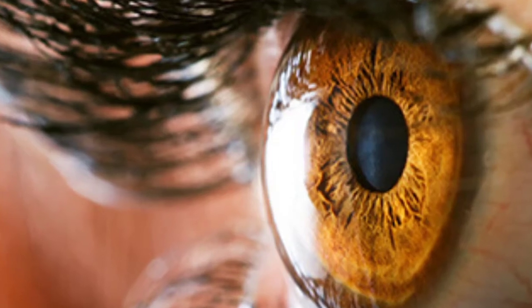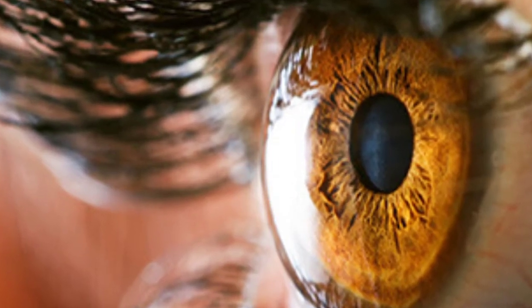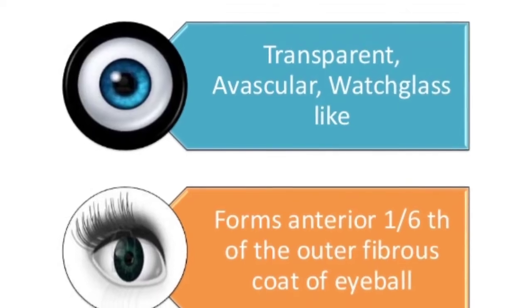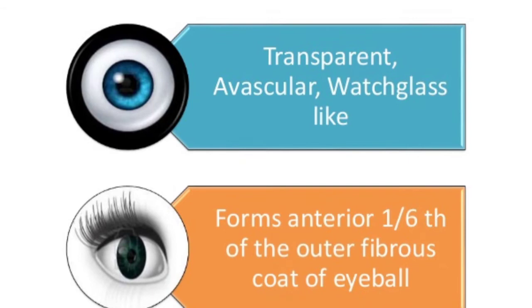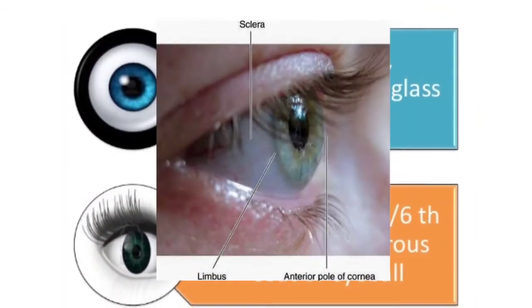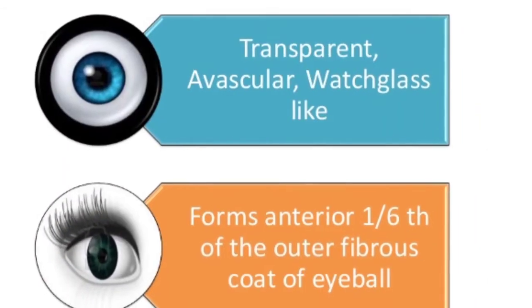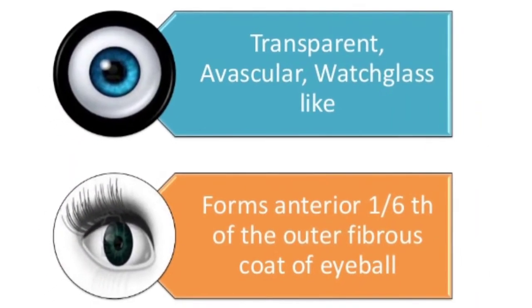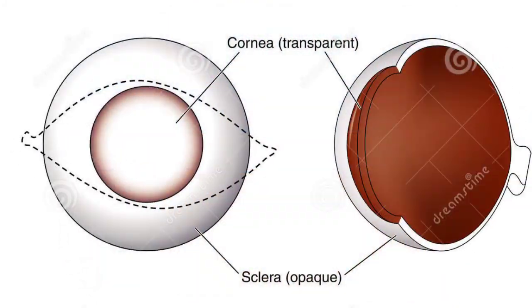We will quickly revise the dimensions of the cornea. The cornea is a transparent avascular watch-glass-like structure. It forms the anterior one-sixth of the outer fibrous coat of the eyeball.